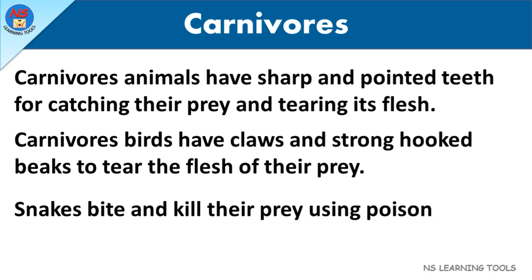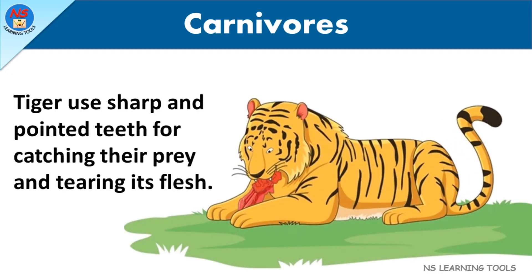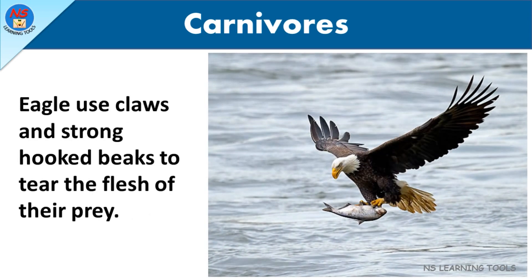Snakes bite and kill their prey using poison. Tigers use sharp and pointed teeth for catching their prey and tearing its flesh. Eagles use claws and strong hooked beaks to tear the flesh of their prey.